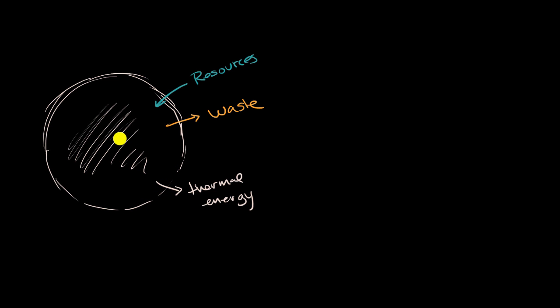As our volume increases, what happens to the ratio of our surface to our volume? Because you could imagine, maybe at some point, the volume gets large enough that you don't have enough surface area to do these three things well. And so let's think about this ratio.